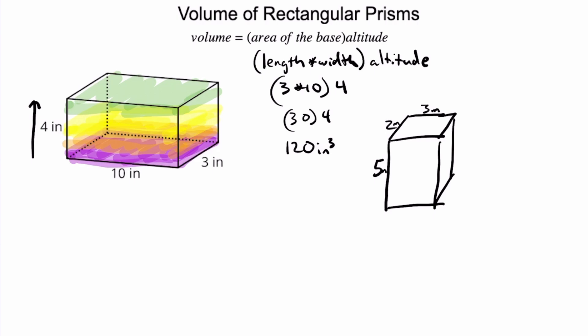We would use that same equation of length times width times altitude. In this case, we have 2 times 3 times 5, or 6 times 5, or 30 cubic meters. The key thing there is that we are really thinking about the base. That's our starting point for the 2 times 3.